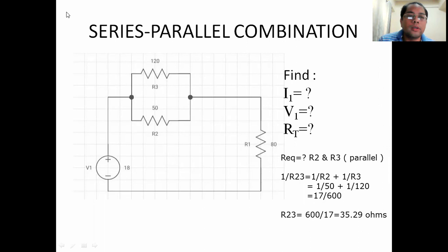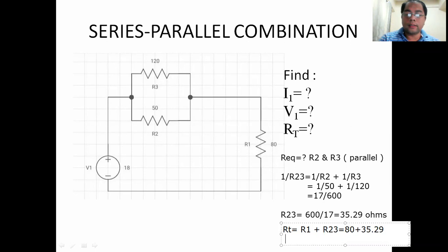Now let's go to another one. So R total now can be calculated. We just use that as R total. So that will be R1 plus R23. So R23 is the combined value, 35.29. So R1 is 80 plus 35.29, and that gives me 115.29 ohms, of course.